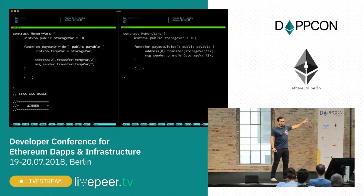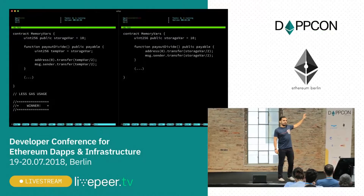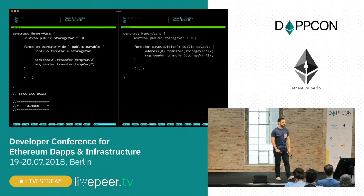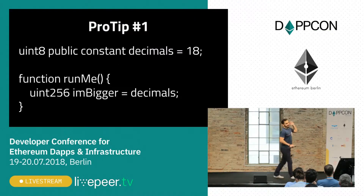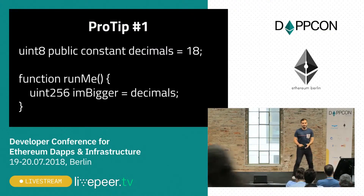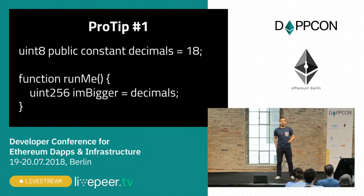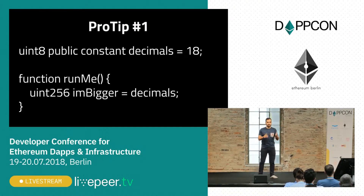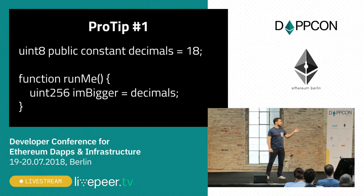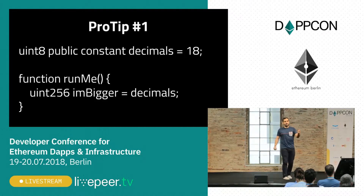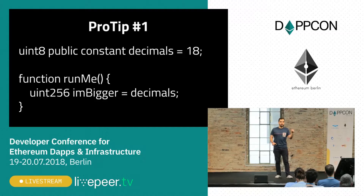These results are with the optimizer turned on. A tip: when you're using constants, make sure you use literals. Don't use constant expressions. Don't think that just because you're using the constant keyword, if you're doing a keccak256 hash, you will not use the SHA-3 opcode, because you will.